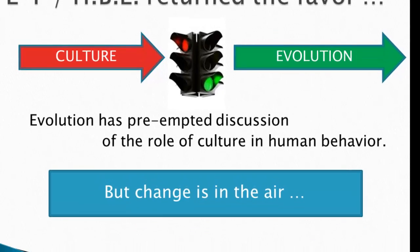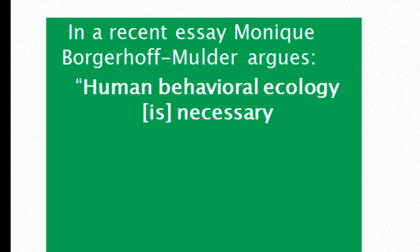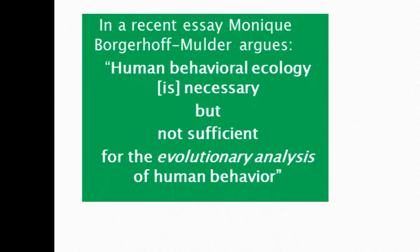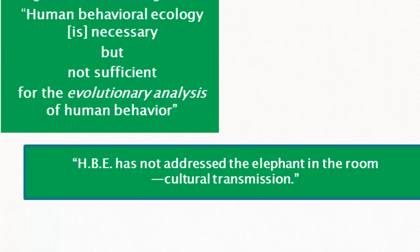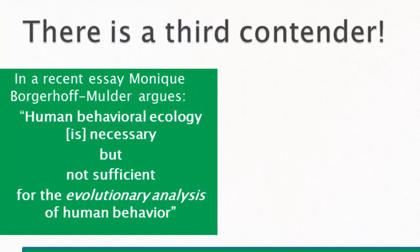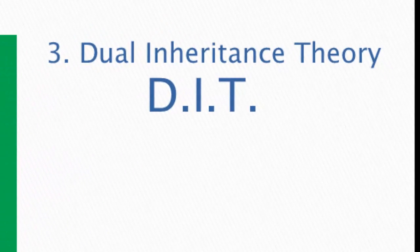Change seems to be in the air. One of the leading behavioral ecologists, Monique Borgerhoff Mulder, argued in 2013 that human behavioral ecology is necessary but not sufficient for the evolutionary analysis of human behavior. She argues that human behavioral ecology has not addressed the elephant in the room, and that elephant is cultural transmission. So there's a third contender — we now introduce dual inheritance theory, or DIT.